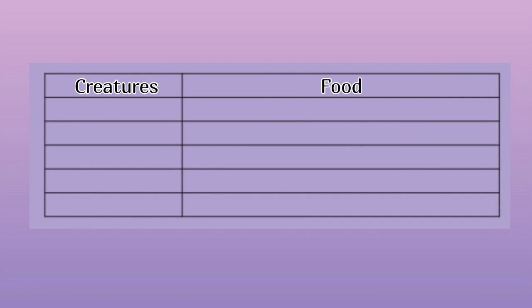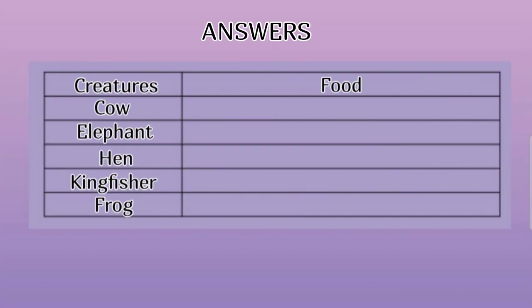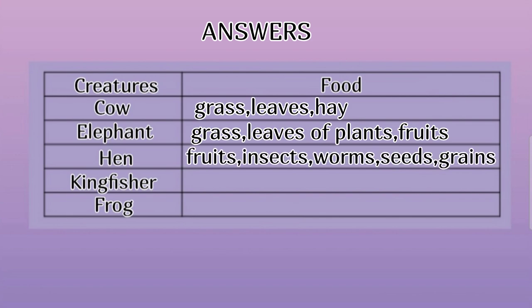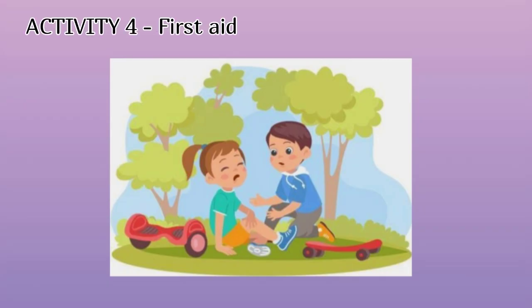Answers — Creatures and their food: Cow: Grass, Leaves, Hay. Elephant: Grass, Leaves of Plants, Fruits. Hen: Fruits, Insects, Worms, Seeds, Grains. Kingfisher: Fish, Frogs. Frog: Flies, Worms, Moths, Insects in water.